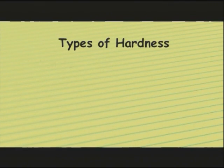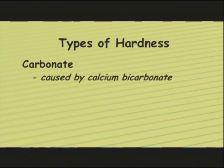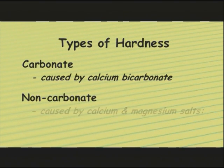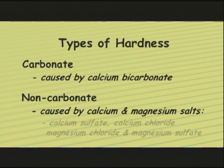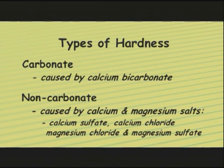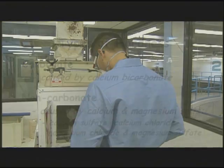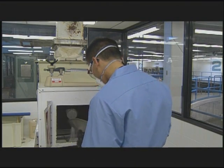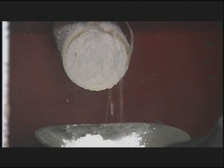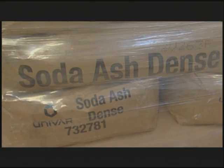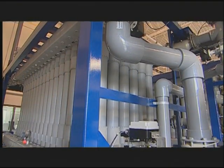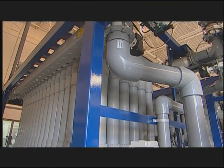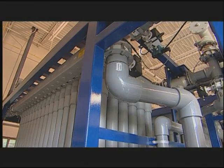There are two types of hardness: carbonate hardness, caused primarily by calcium bicarbonate, and non-carbonate hardness, caused by calcium and magnesium salts like calcium sulfate, calcium chloride, magnesium chloride, and magnesium sulfate. In water treatment, lime is used to remove chemicals that cause carbonate hardness, and soda ash is used to address non-carbonate hardness. Other processes like ion exchange or membranes are also used to remove these substances.